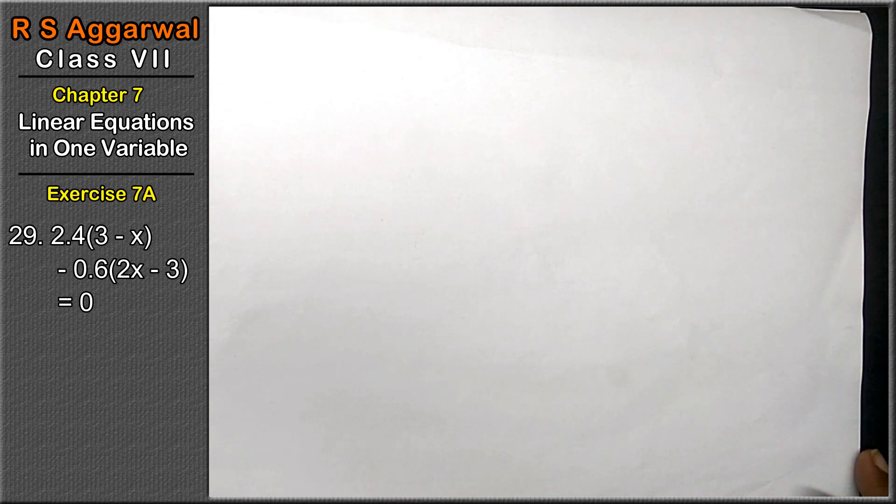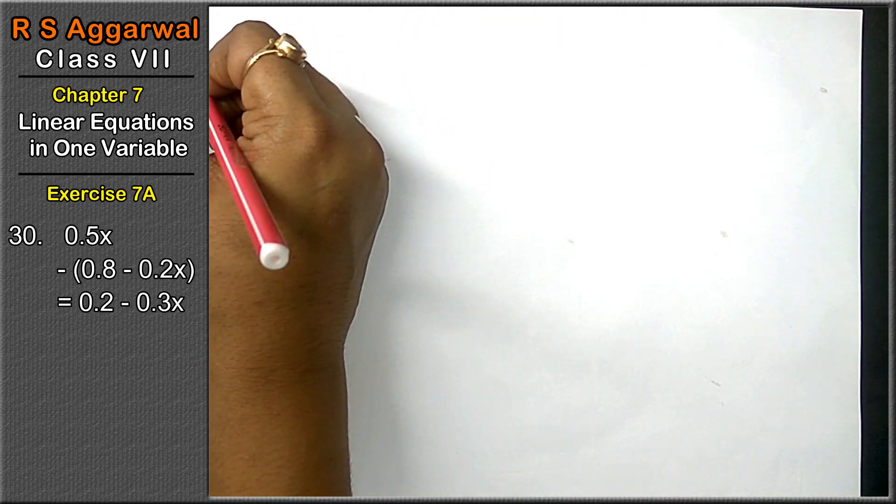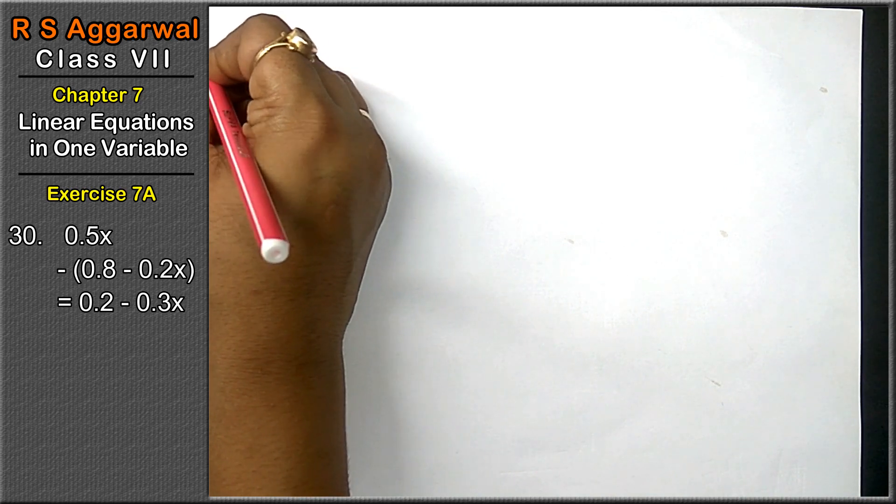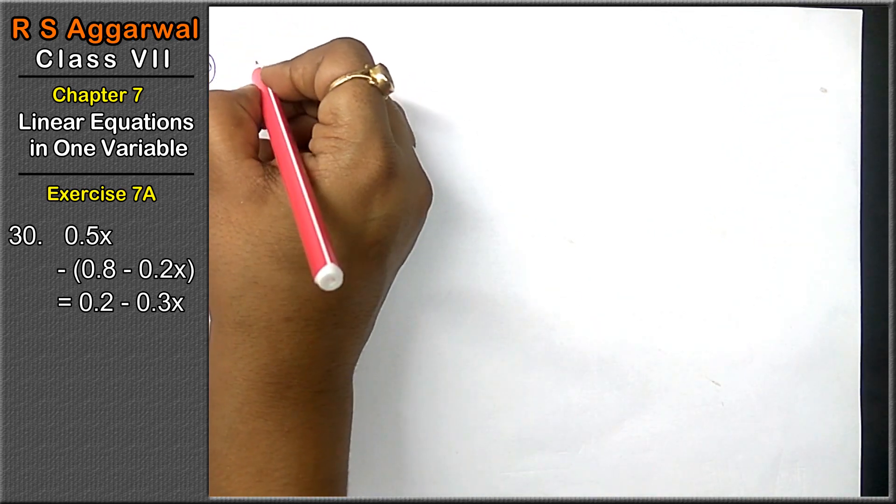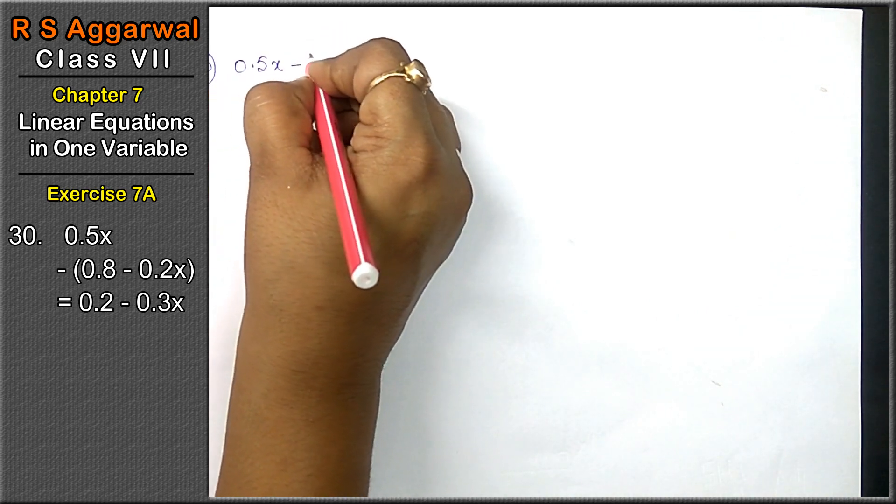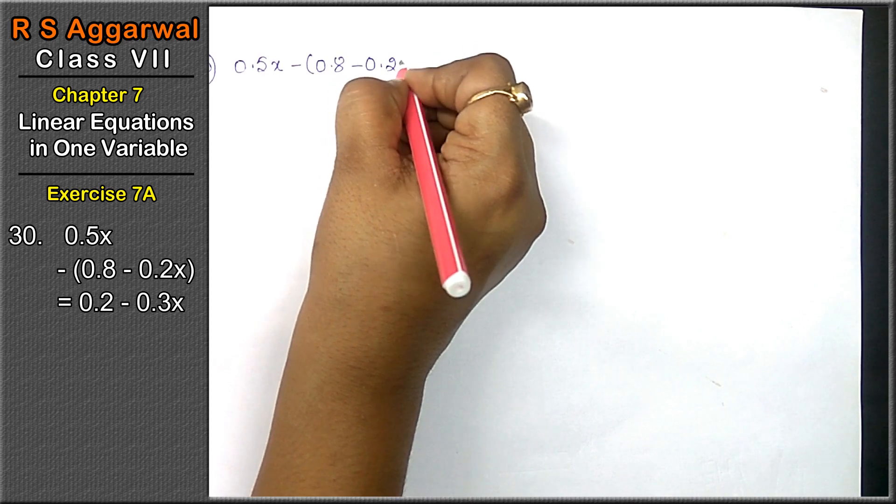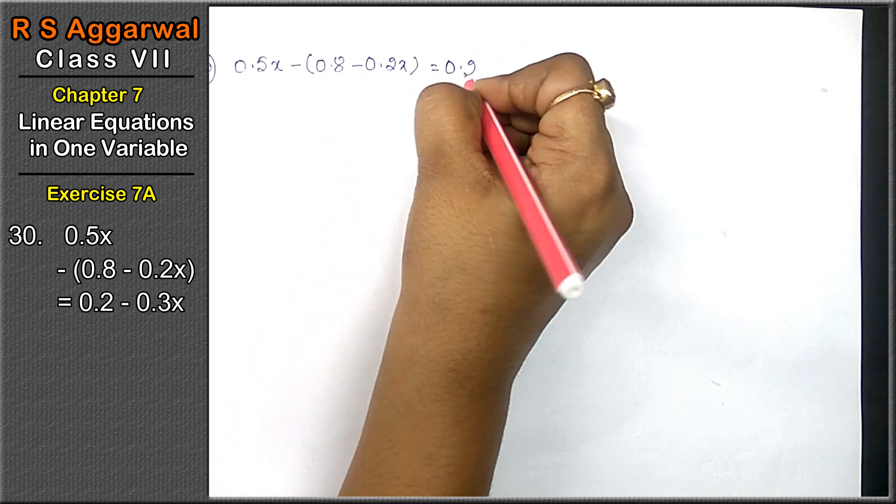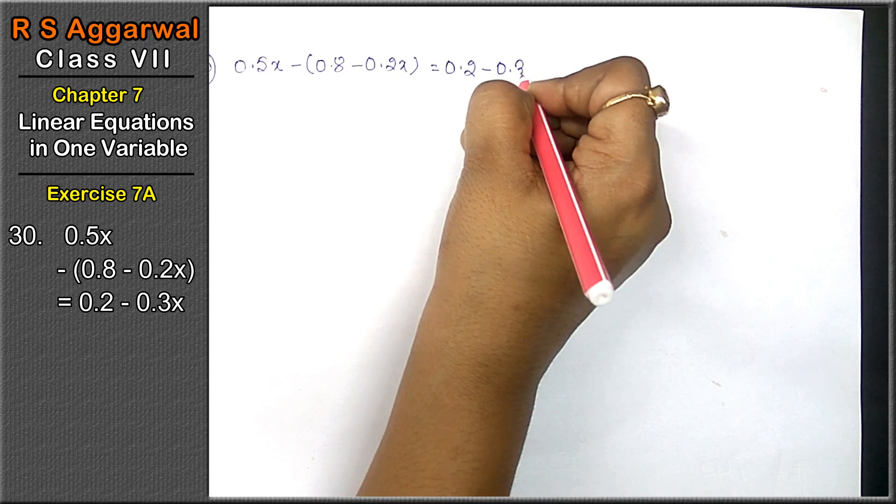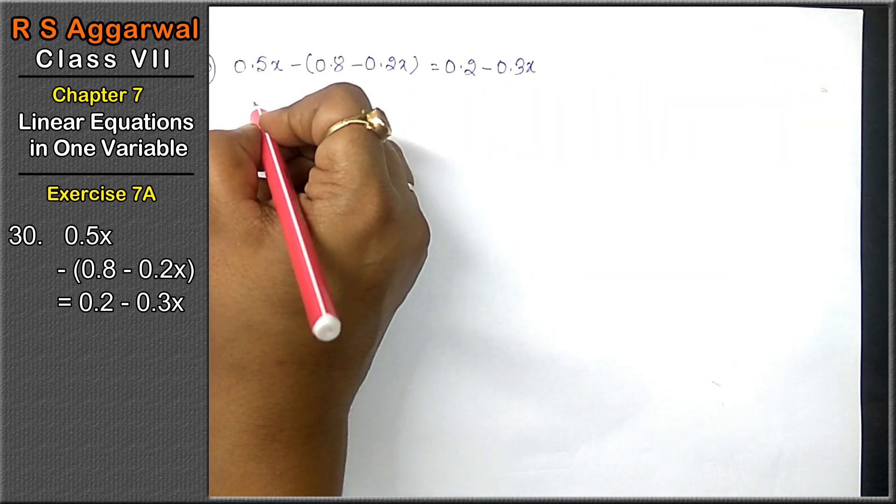Let's do the next question. Question 30 is 0.5x - (0.8 - 0.2x) = 0.2 - 0.3x. Now we will open the brackets.